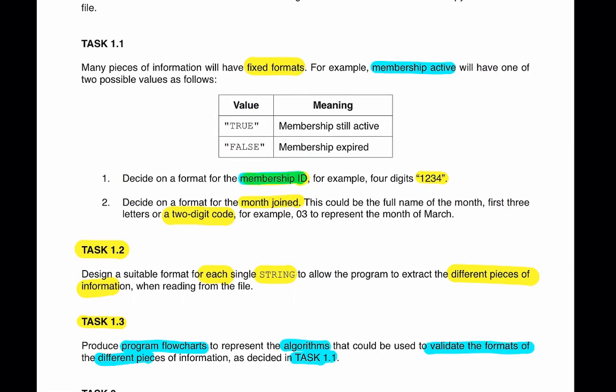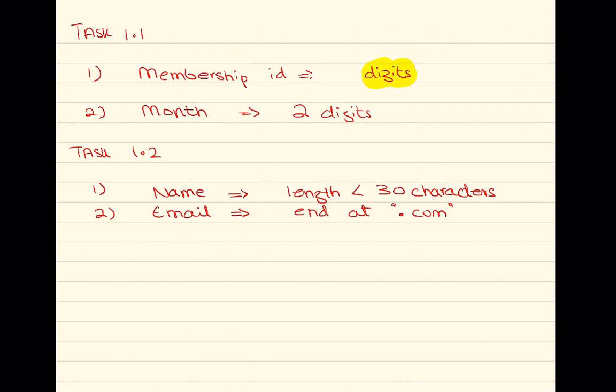of information that we decided the format for: membership ID and month joined. For membership ID, we decided it should be four digits, and for month it should be two digits, obviously between 01 and 12. So let's start with this